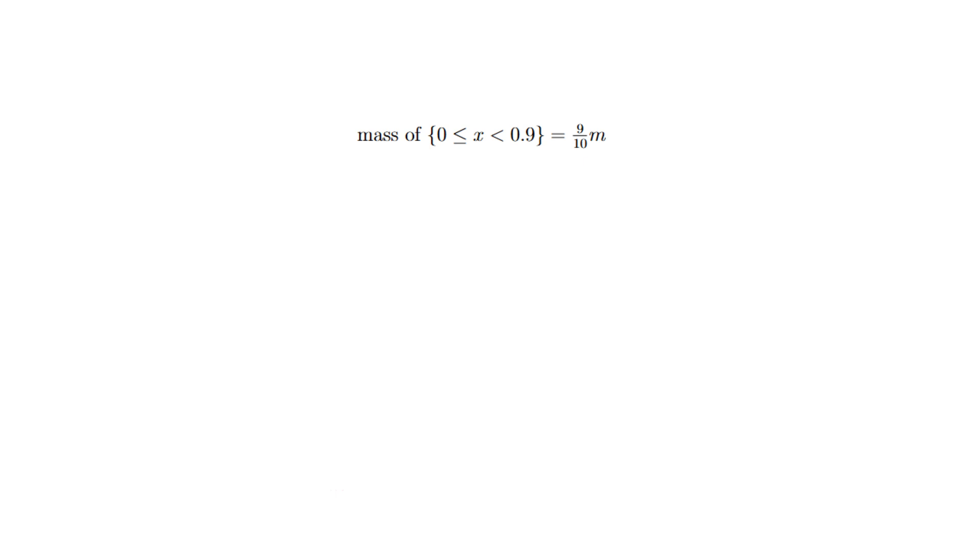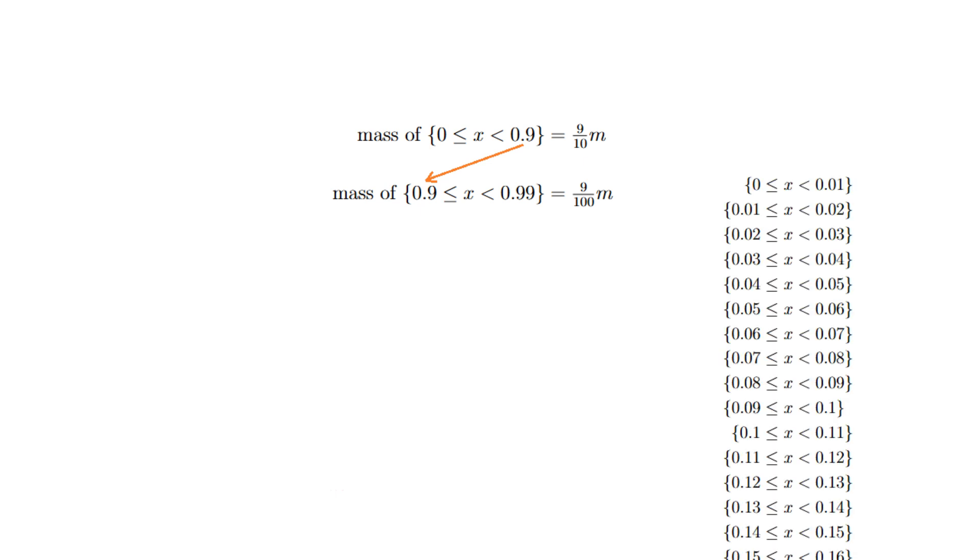Now let's consider another stretch of the number line adjacent to the one that we just considered, namely the stretch going from 0.9 inclusive up to 0.99 exclusive. What's the mass of this stretch? It's nine hundredths of m. To justify this, remember how we divided our original stretch into 10 parts all having the same mass as each other? Well we could just as well have divided our original stretch into a hundred parts in the same manner. So again, all of the hundred parts would have the same mass as each other. And then the combined stretch of the 91st through to the 99th parts would constitute exactly this stretch going from 0.9 inclusive up to 0.99 exclusive. And so it follows that the mass of this stretch is nine hundredths of m.